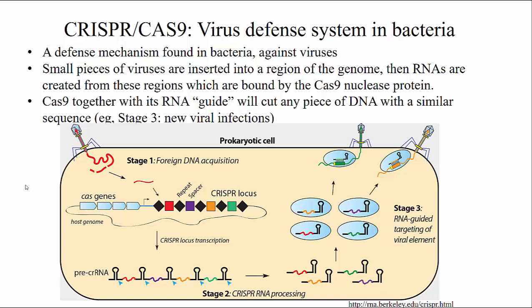CRISPR-Cas9 is a virus defense system found normally in bacteria. The bacteria has a region in its genome containing several parts. The first part is several Cas9 genes encoding proteins that, if recruited to a region of the genome, will cleave that nucleotide sequence. The nearby region is like a little book of bad things the cell keeps track of: if this cell experienced a viral infection in the past and survived, it will take a little part of that foreign DNA from the virus and insert it into this region of the genome, between repeat sequences shown by black diamonds.